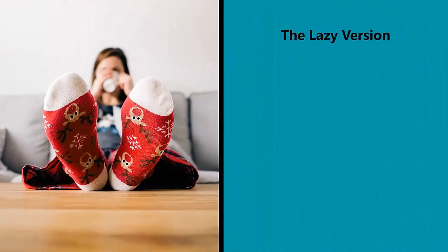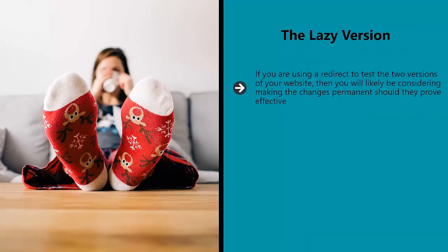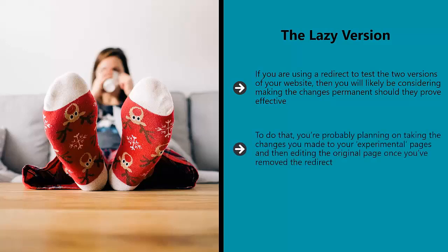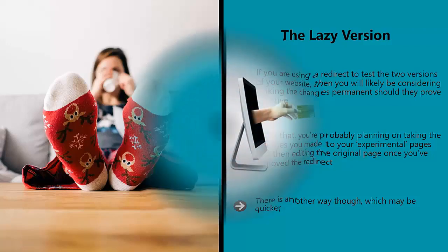The lazy version. If you are using a redirect to test the two versions of your website, then you will likely be considering making the changes permanent should they prove effective. To do that, you're probably planning on taking the changes you made to your experimental pages and then editing the original page once you've removed the redirect. There is another way, though, which may be quicker — this is to take the edited version and simply make the redirect permanent. You can do this with a redirect, but note that by using a 301 redirect from your .htaccess file you will risk losing 10% of your link equity. To prevent this from happening, use a JavaScript or PHP redirect instead.